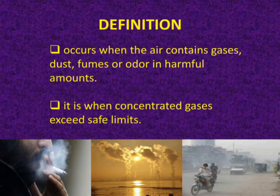Definition: Air pollution occurs when the air contains gases, dust, fumes, or odor in harmful amounts. It is when concentrated gases exceed safe limits.